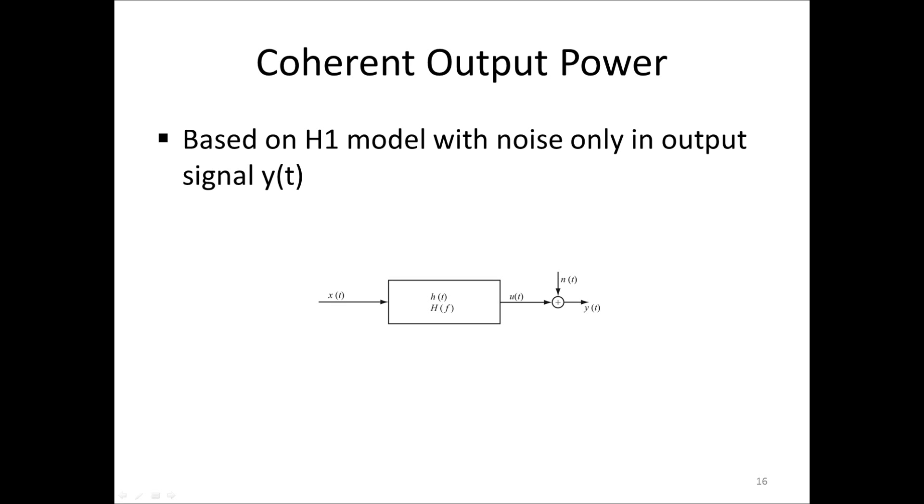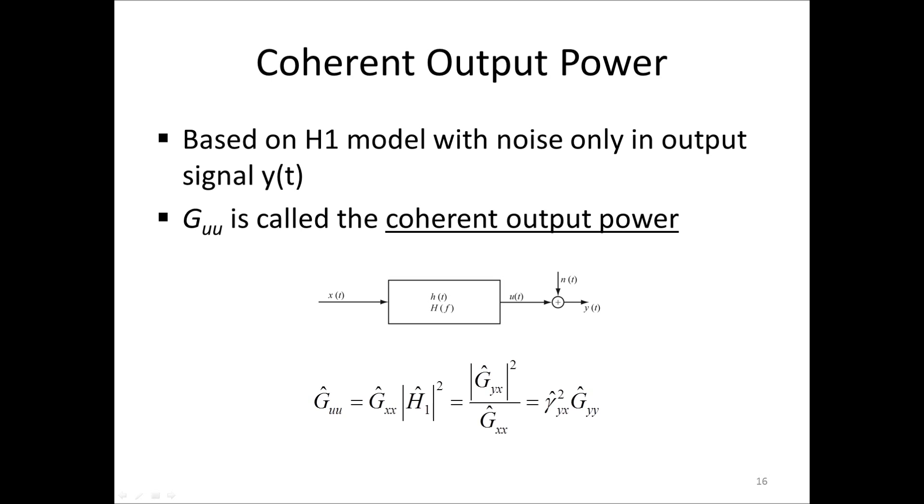To interpret the coherence, we first define the coherent output power, which is based on the H1 model. Now, GUU equals GXX times the magnitude squared of the H1 estimate, which is the coherence times GYY. Also, if we want to know the contaminating spectral density GNN, it can be found by taking 1 minus the coherence times GYY.